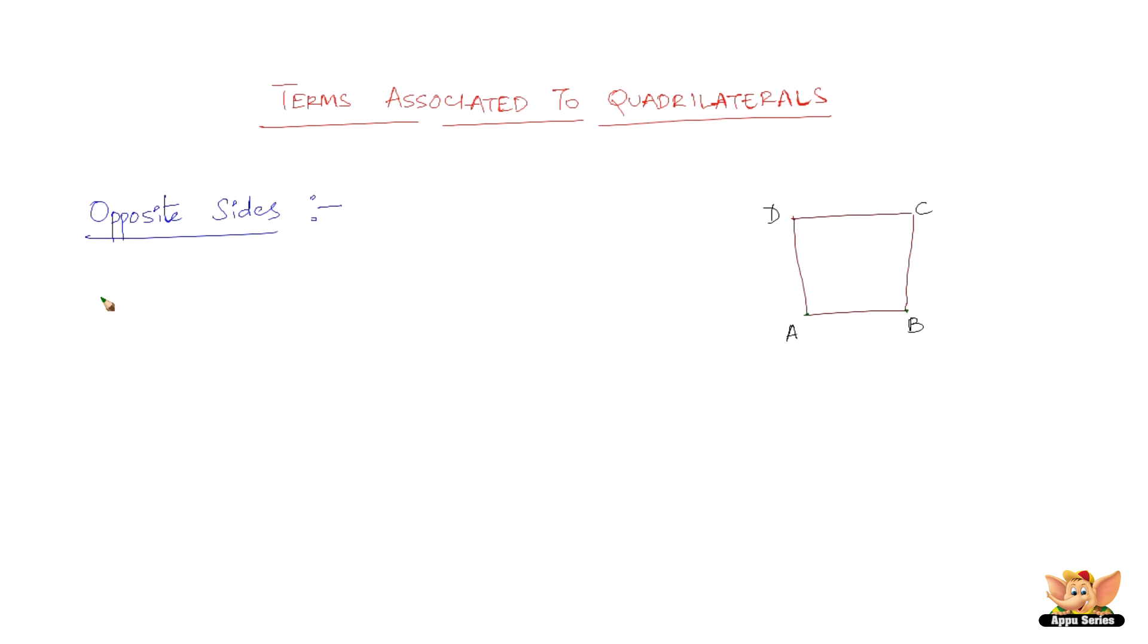So in the given quadrilateral, let me make a list of what are opposite. AB and CD are opposite sides, AD and BC are the opposite pairs. So now these are the two pairs of opposite sides present in this quadrilateral.